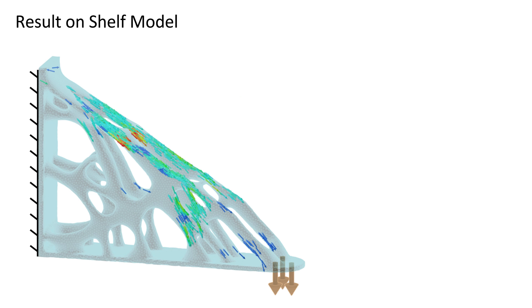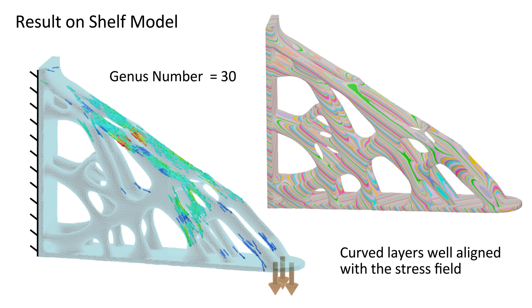Our neural slicer can handle models with very complicated topology, such as the shelf model. The genus number is 30. The curved layers generated by our slicer can align with the stress field very well.